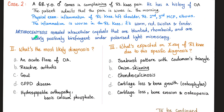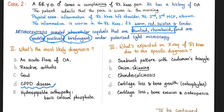The same patient — arthrocentesis came back revealing intracellular crystals, meaning inside the neutrophil, that are blunted rhomboid and are weakly positively birefringent under polarized light microscopy. What's the most likely diagnosis? Since these are weakly positively birefringent crystals that are rhomboid in shape, this is pseudogout — CPPD disease, calcium pyrophosphate dihydrate deposition disease. What's expected on x-ray due to this specific diagnosis?